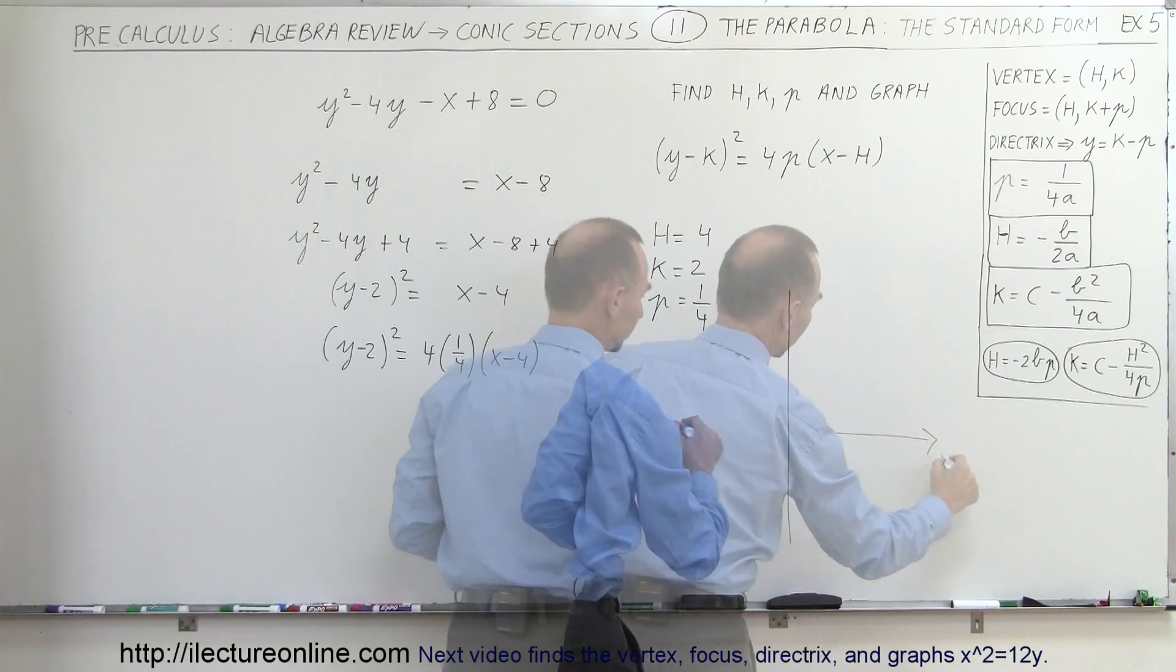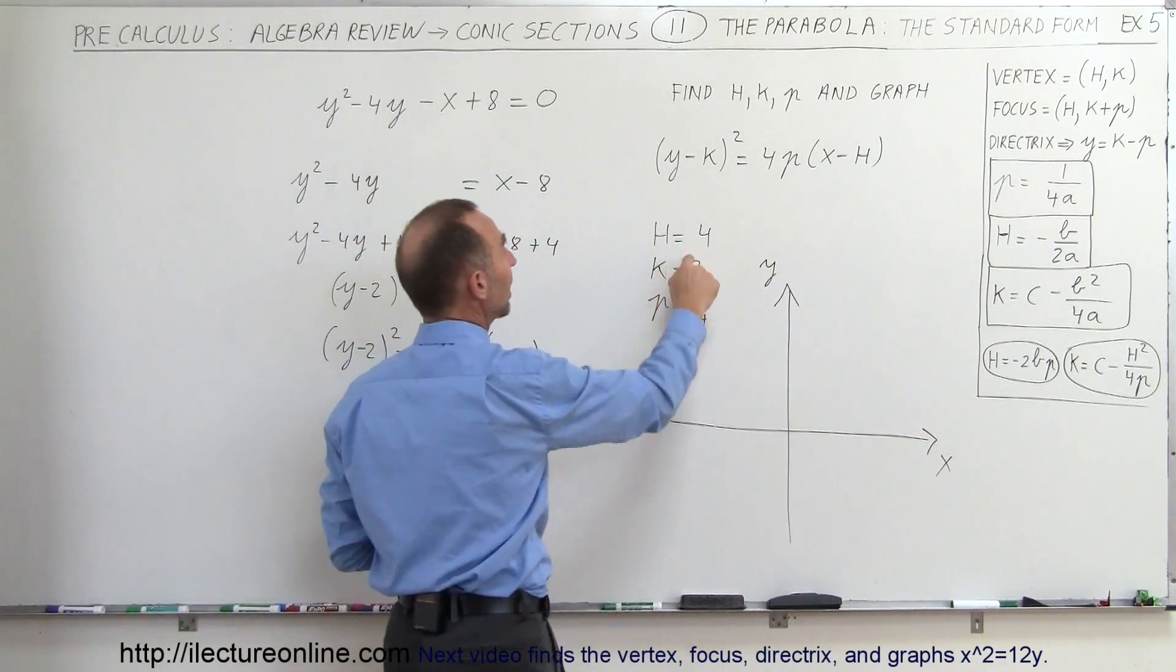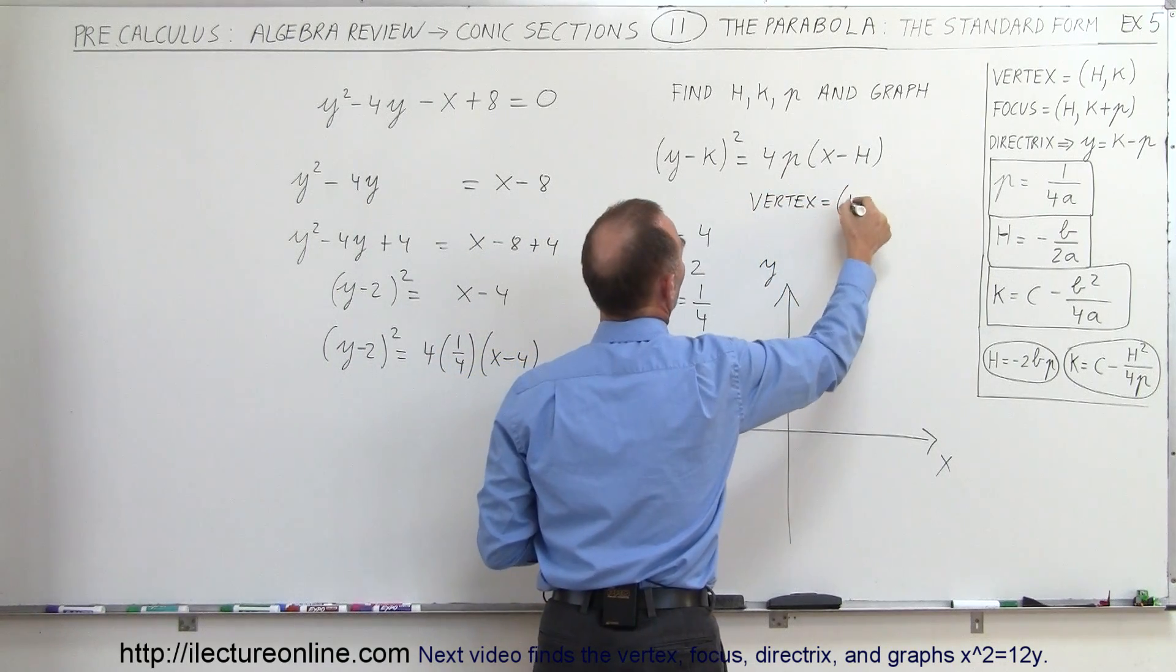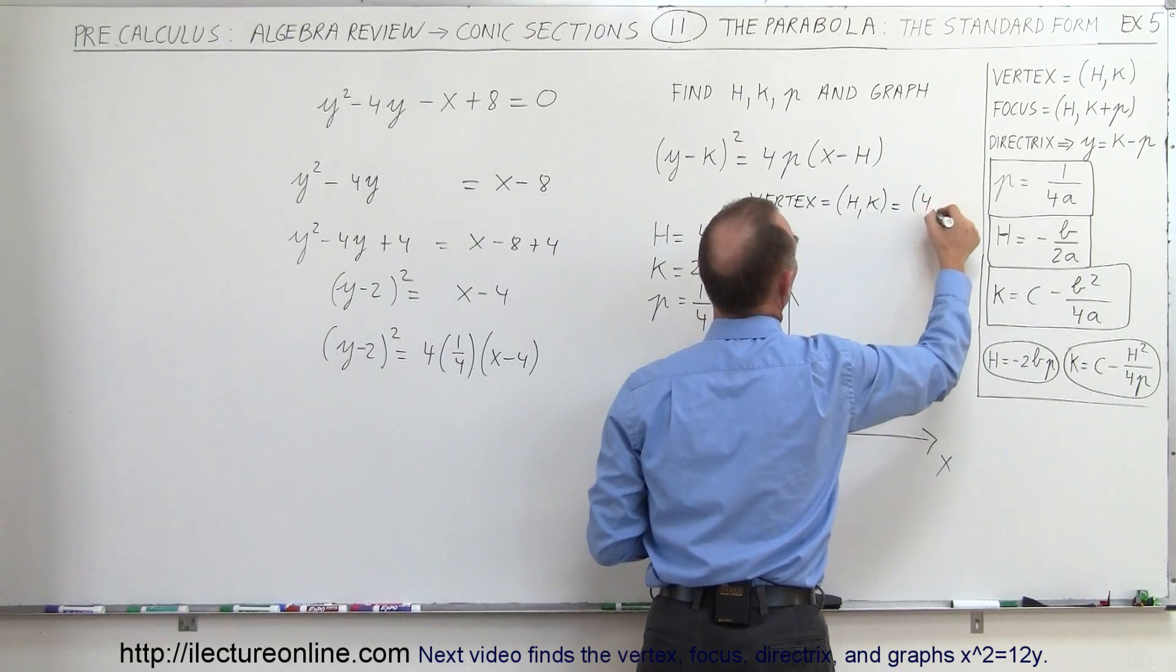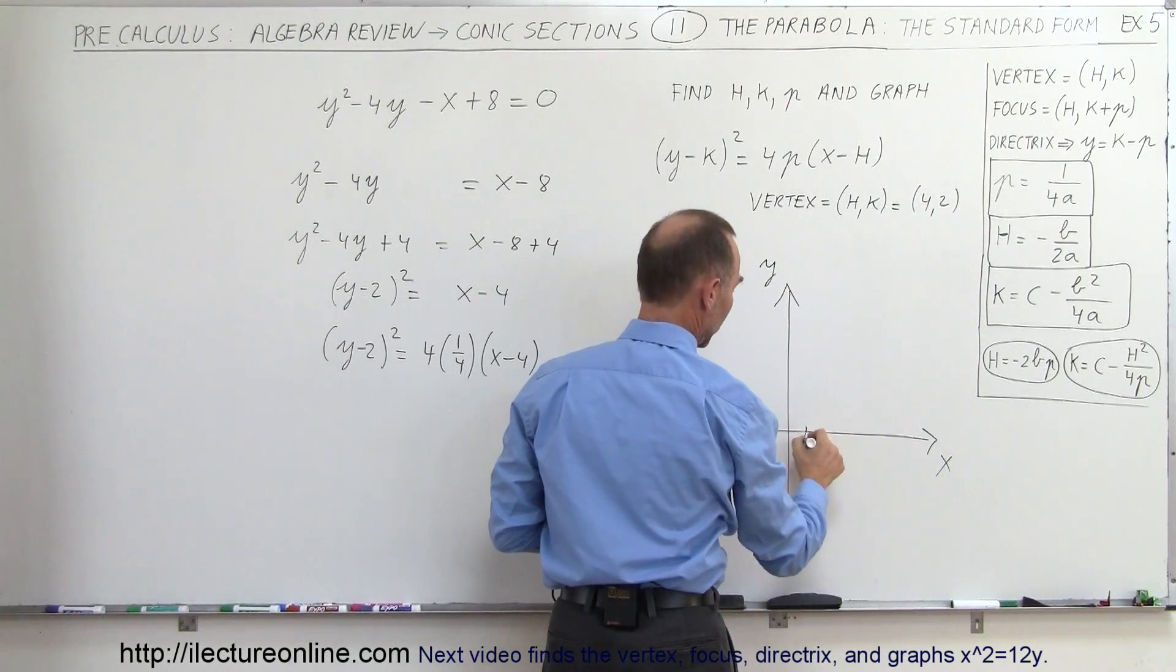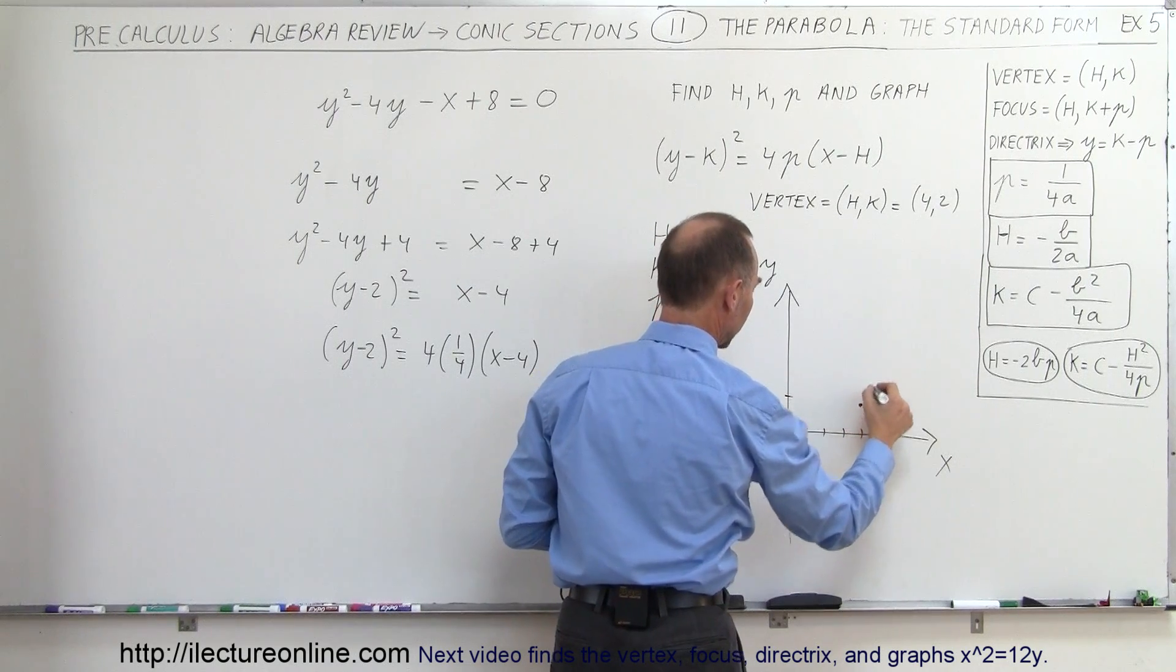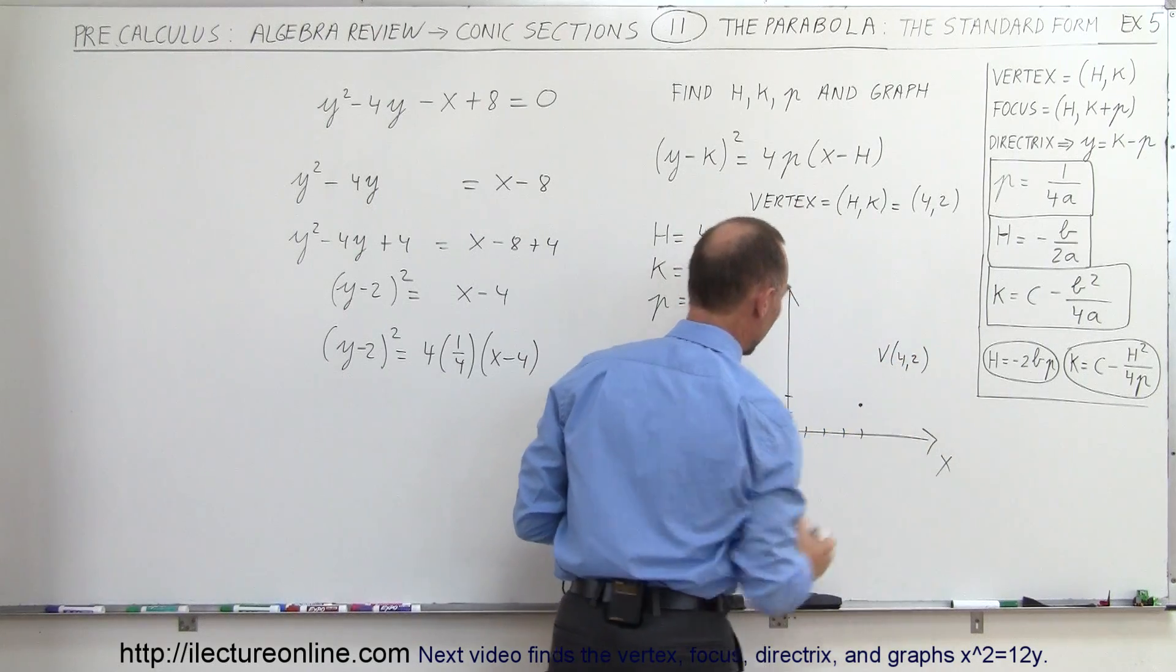So we have a little bit of space right here. First we want to find the vertex. The vertex can be found at (h,k), right? So the vertex is equal to the coordinates (h,k). In this case it's equal to (4, 2). So 1, 2, 3, 4... 1, 2... there's my vertex right there. So the vertex at (4, 2).